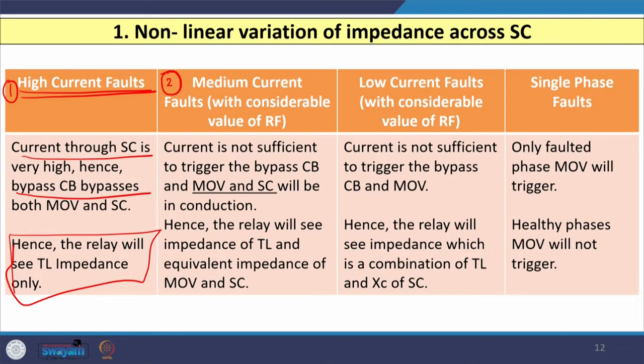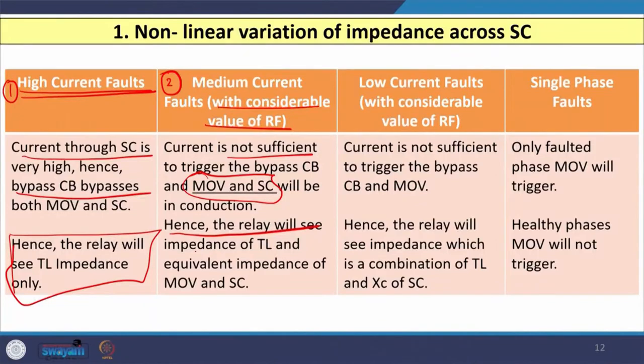The second condition is when the magnitude of fault current is moderate — medium fault currents with some considerable fault resistance. In this case, the current is insufficient to trigger the bypass circuit breaker, and both the MOV and series capacitor are in conduction — they are not bypassed. Currents I_MOV and I_SC are both flowing. Hence, the relay sees the impedance of the transmission line plus the equivalent impedance of the MOV and SC combined, giving a different net impedance.